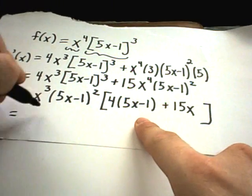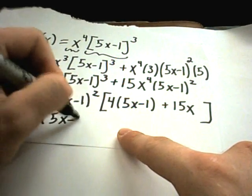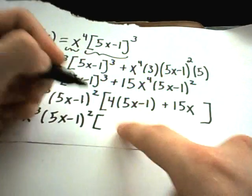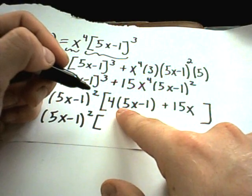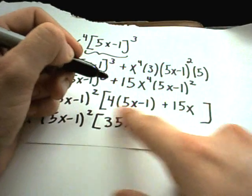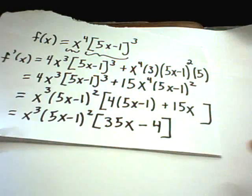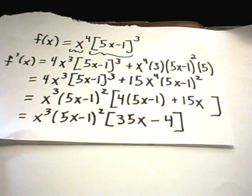And now you can simply reduce things down inside of the parentheses. So if you distribute, you'll get 20x plus 15x. That's 35x. You'll get 4 times negative 1, which is negative 4. And that's now simplified and factored.